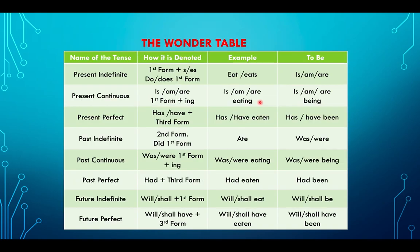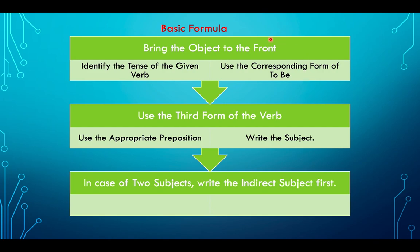We will write the form of 'to be', identify the tense, and then write the appropriate form of 'to be', followed by the third form of the verb. Then we use the appropriate connecting preposition — 'by', 'in', 'to' — whichever fits — and then write the subject.